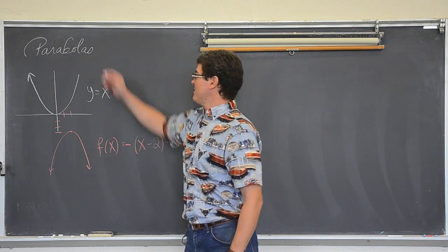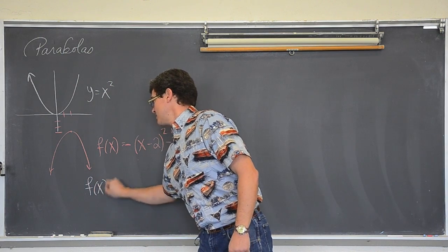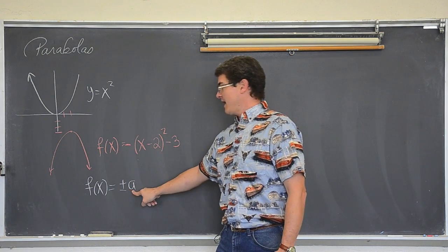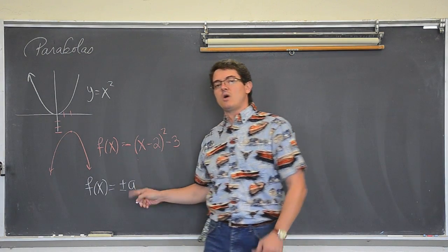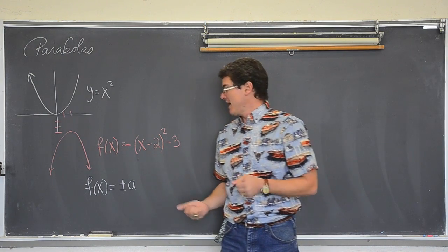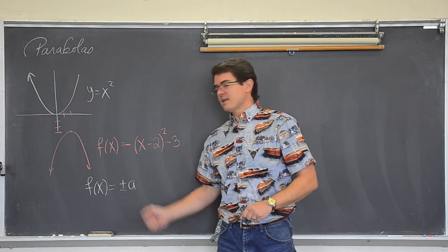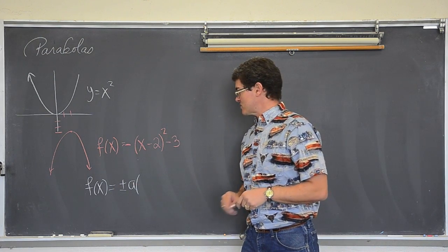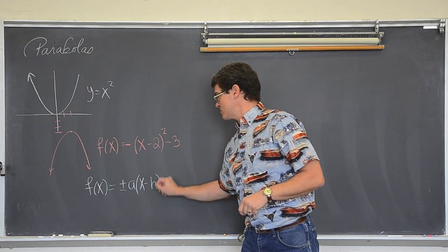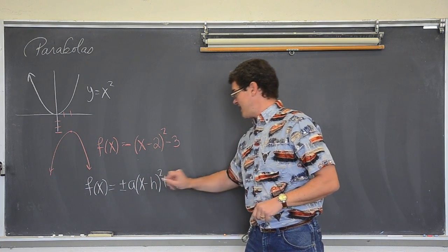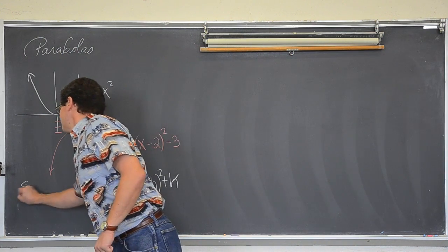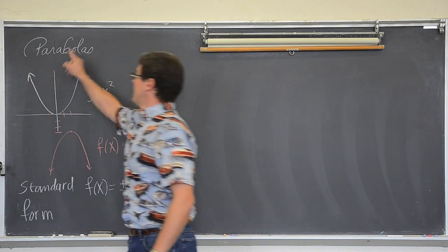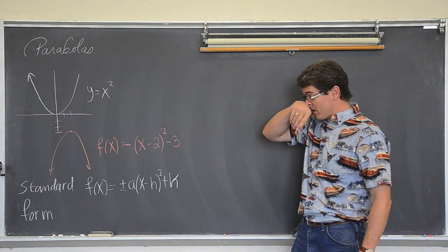Well, the transformations chapter of our book, or if you want to go back and watch another video if you are not in my class, helps us understand where the standard form of a parabola comes from. The standard form of parabolas is f of x equals plus or minus a, that is possibly a vertical flip.